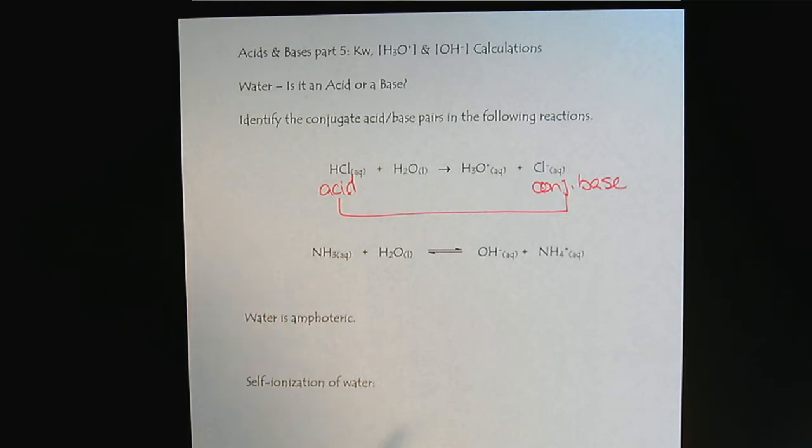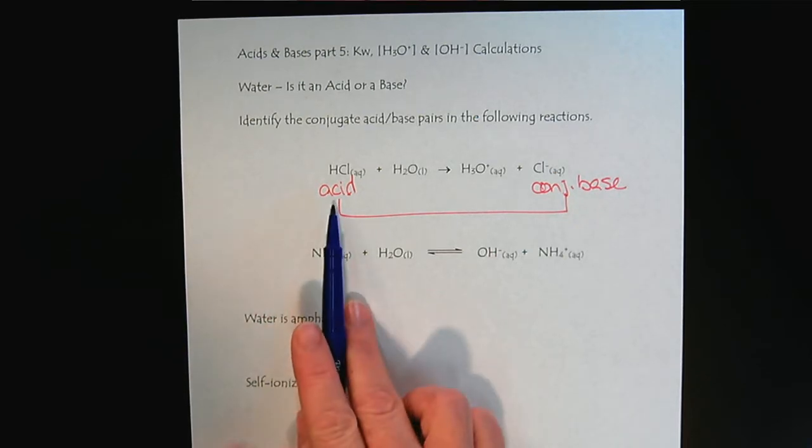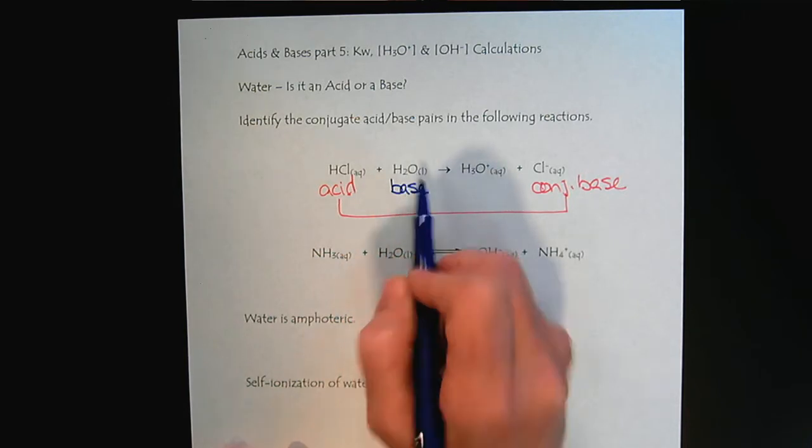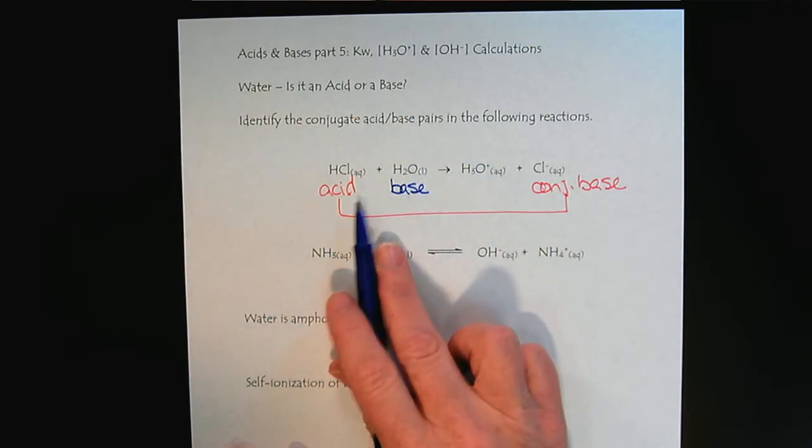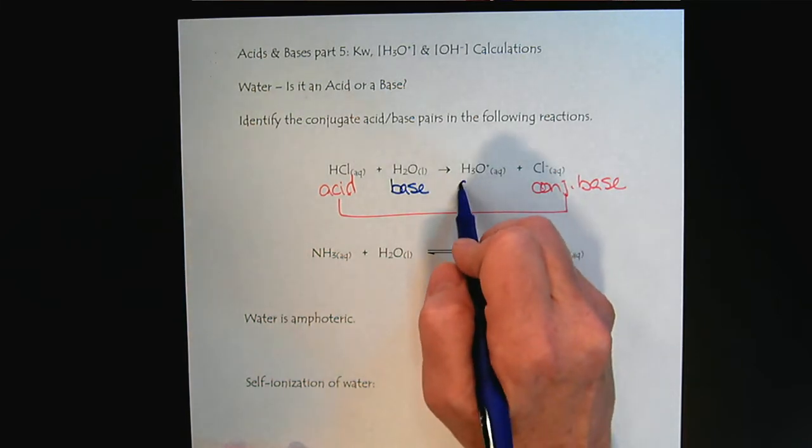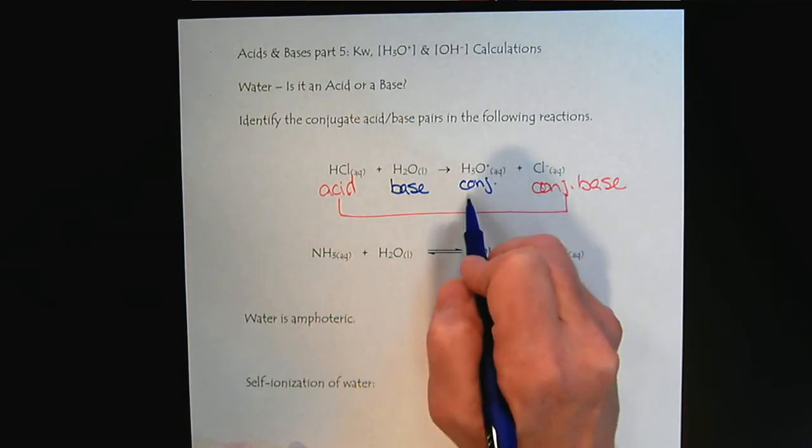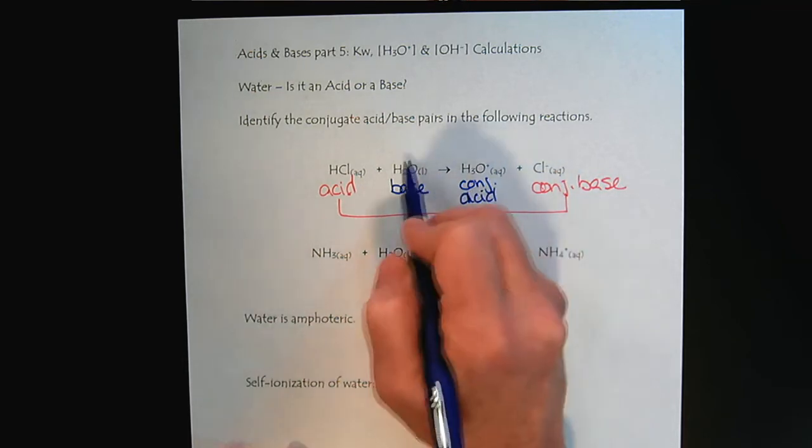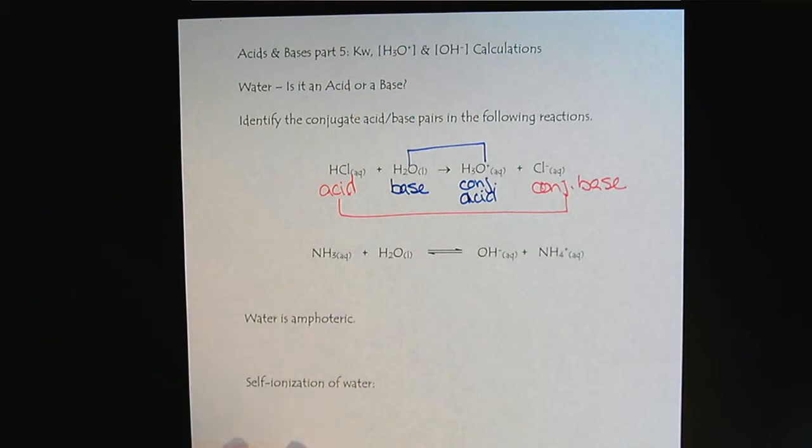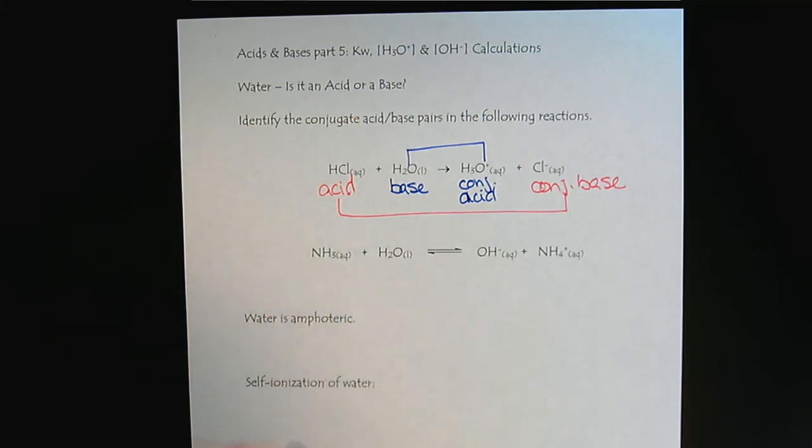So in every acid-base reaction, there's going to be an acid and a base. And the water is serving in the role of the base, because it accepted the proton from the acid to create the hydronium ion. So that would be our conjugate acid. So here we've labeled the conjugate acid-base pairs of the first reaction.